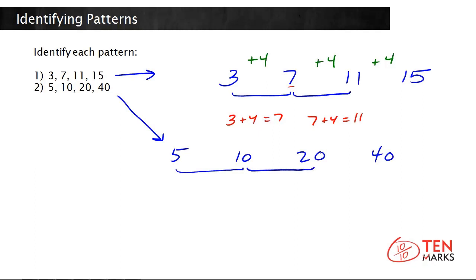Compare the next two numbers, 10 and 20. If the pattern was made by the rule add 5, this number would be a 15, not 20. So, adding 5 isn't correct.